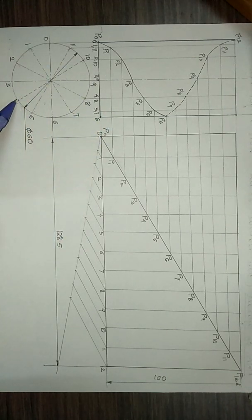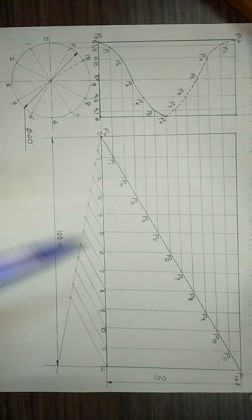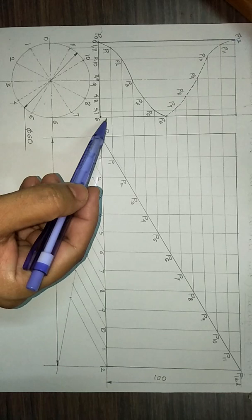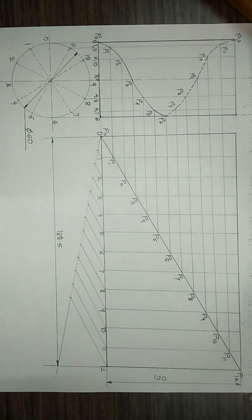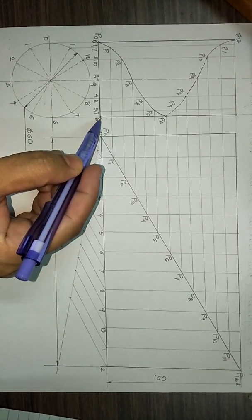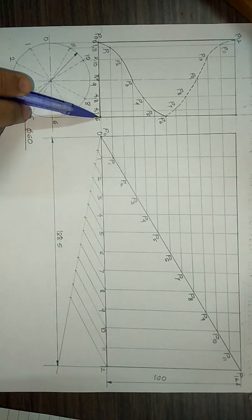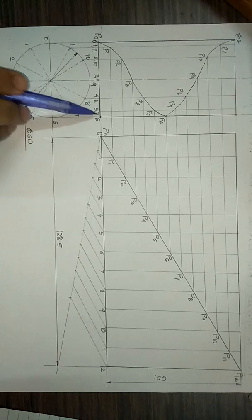The top view will be a circle because as you see the cylinder from the top, it will appear as a circle, the diameter of which will be 60 mm. The front view will be the rectangle. The height of the rectangle will be 100 mm, which is the height of the cylinder, and the width will be 60 mm.